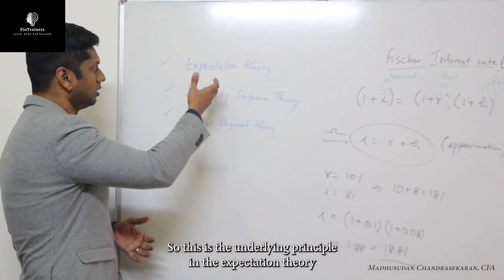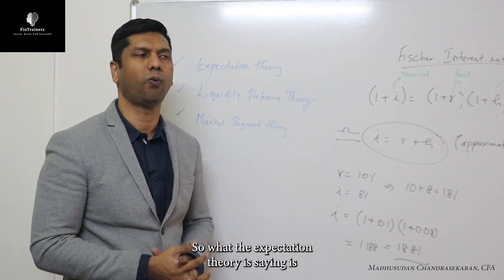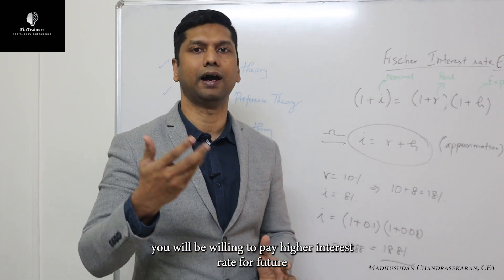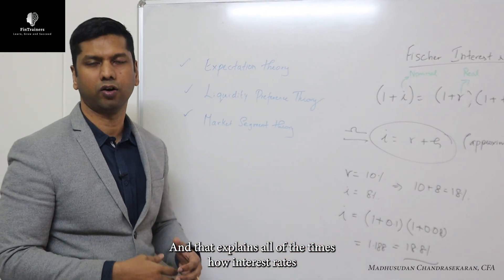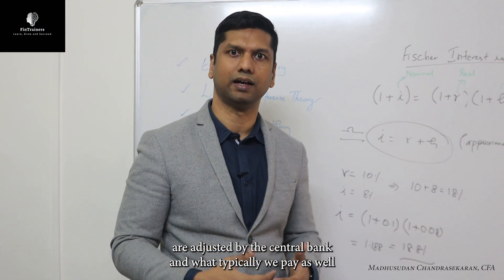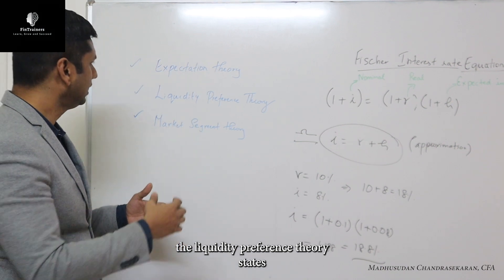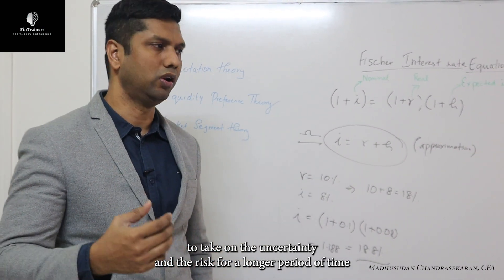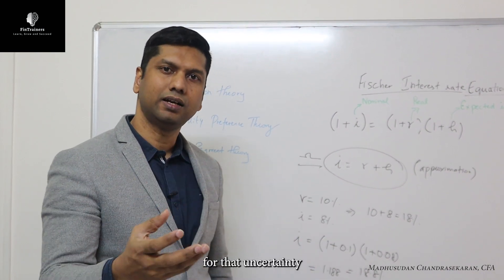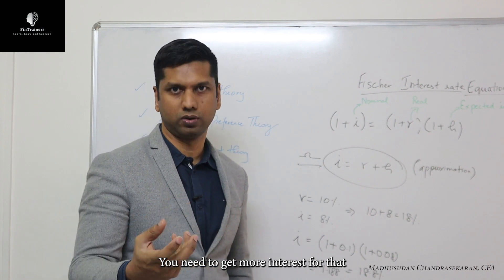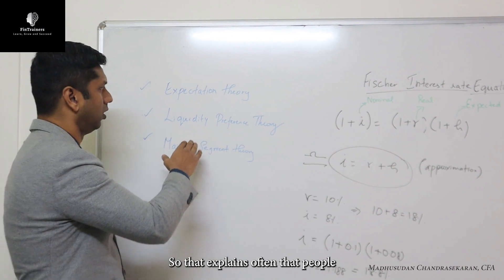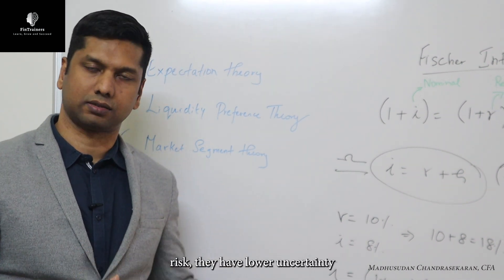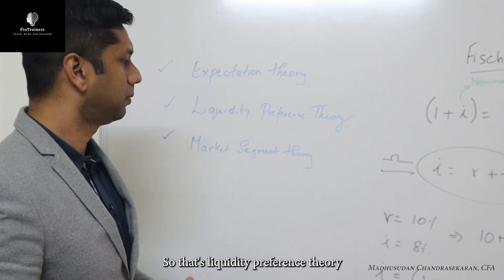This is the underlying principle of the expectations theory. The expectations theory says that if you expect inflation to be higher in the future, you will be willing to pay a higher interest rate for future periods. This explains how interest rates are adjusted by central banks. The liquidity preference theory states that if you are willing to take on uncertainty and risk for a longer period of time, you need a premium — you need to earn more interest for that. This explains why people prefer to buy shorter-term debt instruments, because they carry lower risk and lower uncertainty.